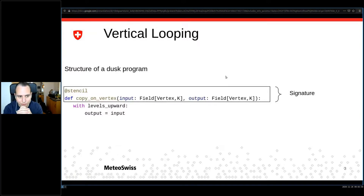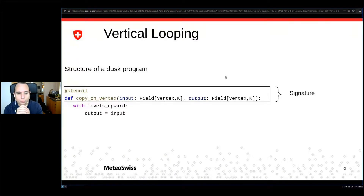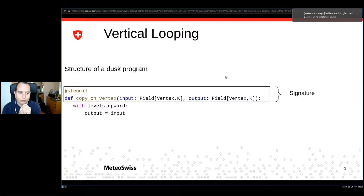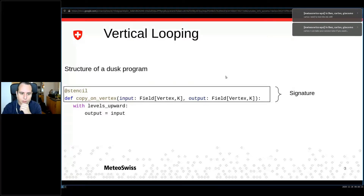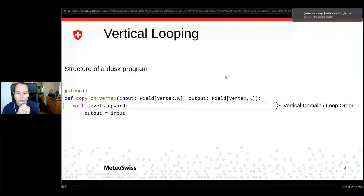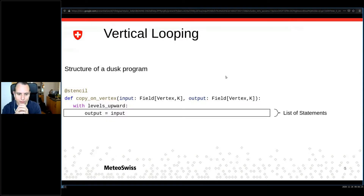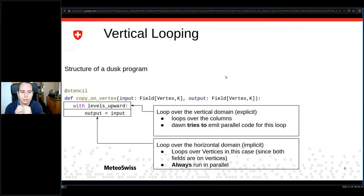As a quick reminder, here we have an extremely basic Dusk program — a copy stencil — where we copy an input field located on vertices to an output field also on vertices. I want to quickly go over the structure imposed by Dusk. We start out with the signature, which has the function name and a list of arguments. After this we have the vertical domain where we specify the intended loop border, and we have a list of statements — the actual payload where the execution happens.